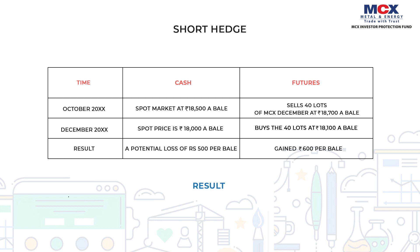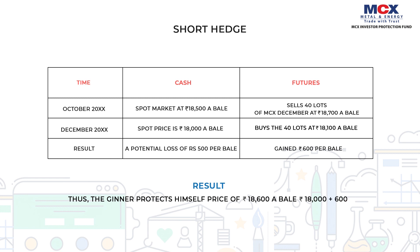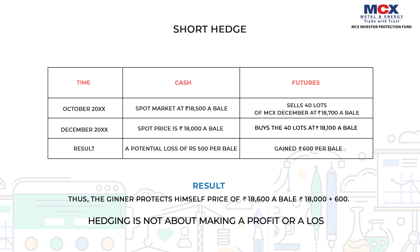Result: The ginner protects himself from falling prices in the spot market — a loss of Rs. 500 — by making a profit of Rs. 600 in the futures contract. Hedging is not about making a profit or a loss; it is about mitigating price risk.